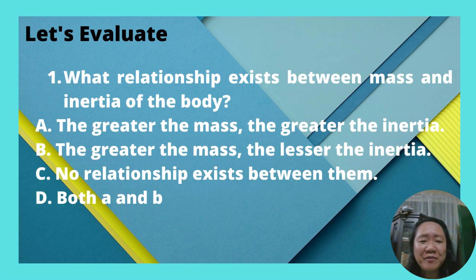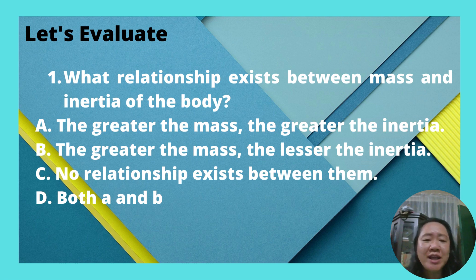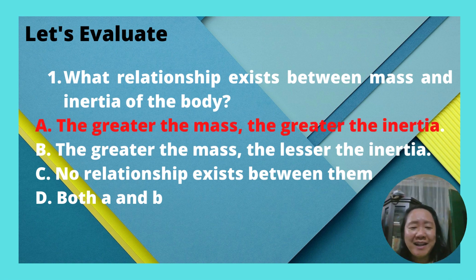Let's evaluate. What relationship exists between mass and inertia of a body? A, the greater the mass, the greater the inertia. B, the greater the mass, the lesser the inertia. C, no relationship exists between them. Or D, both A and B. The answer is letter A — the greater the mass, the greater the inertia.